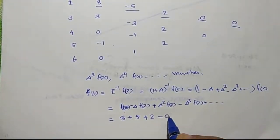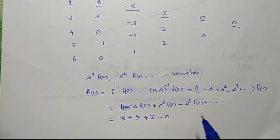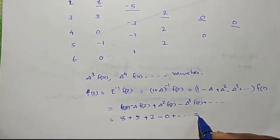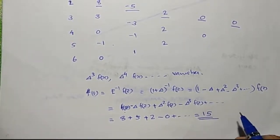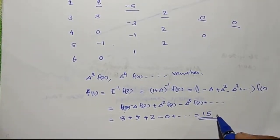So f of 1 equals 8 minus minus 5 plus 2 minus 0, which equals 8 plus 5 plus 2 equals 15. Wait — this equals 15, giving the result as 15. So the first term in the series is 50.